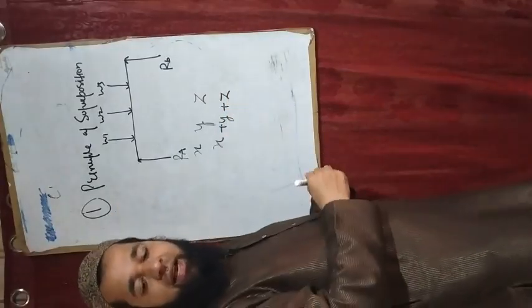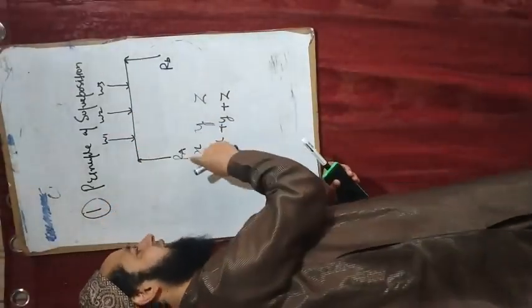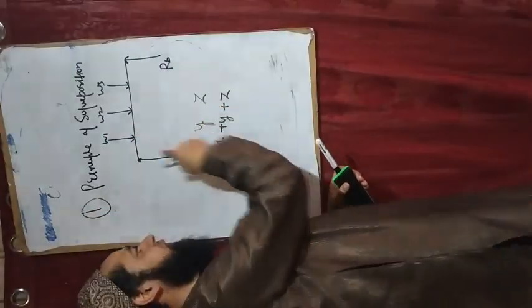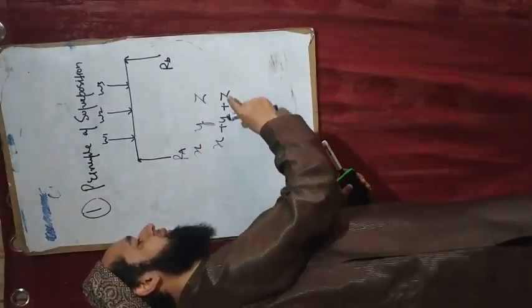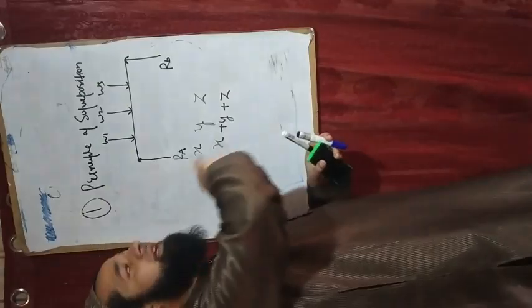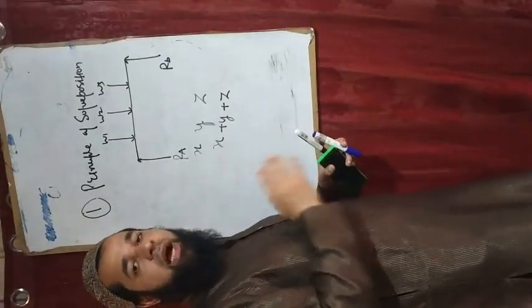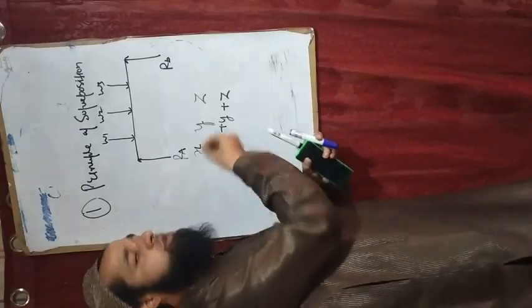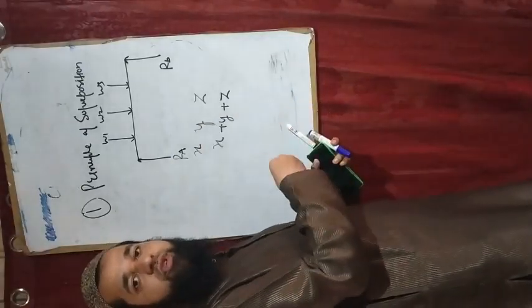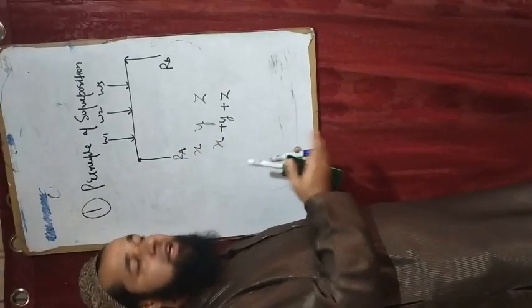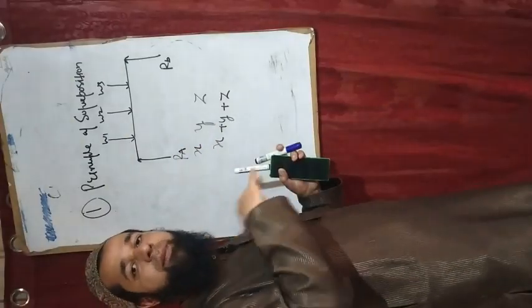Clear? The principle of superposition says that if you have individually seen them — W1 gives reaction X, W2 gives reaction Y, W3 gives reaction Z — then the total reaction RA will be x plus y plus z. If we have complex loading, we will not analyze the loading all at once; we will analyze each load separately and then add the responses. We call this the principle of superposition.